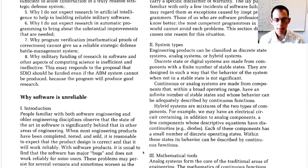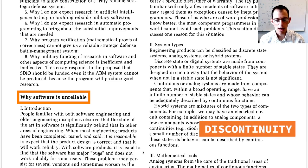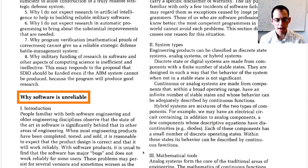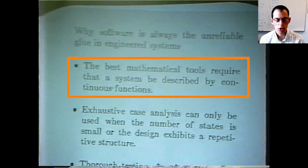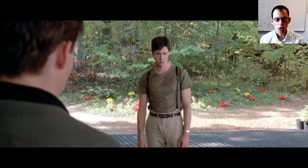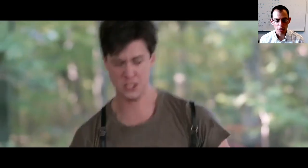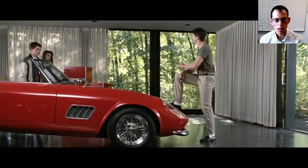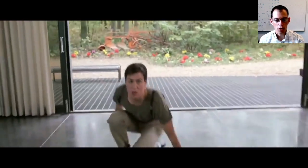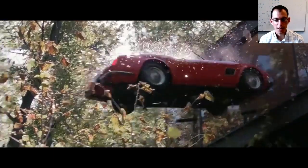So Parnas is trying to explain to a broad audience why computer programs are hard to work with. I want to talk in particular about the first essay: why software is unreliable. If you think about how most objects in your life behave, they behave in a continuous manner — small changes in what you do to them produce small changes in their behavior. Think about a piece of furniture: if you push it a little, it might move a little; if you push it a lot, it will move more.